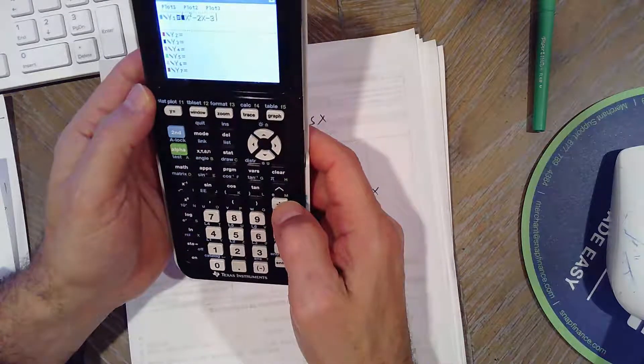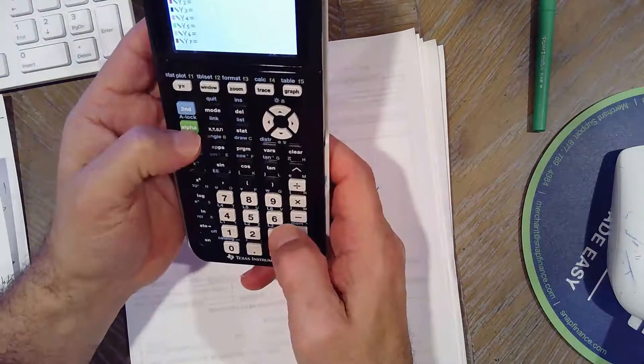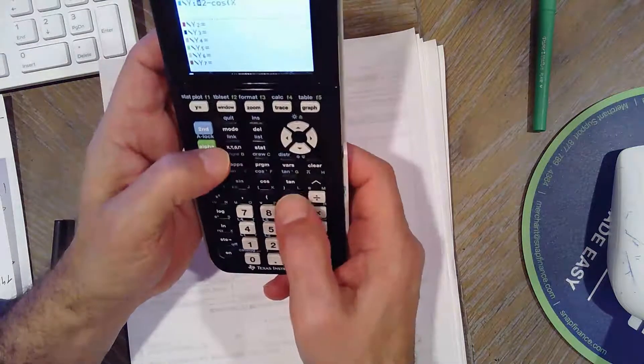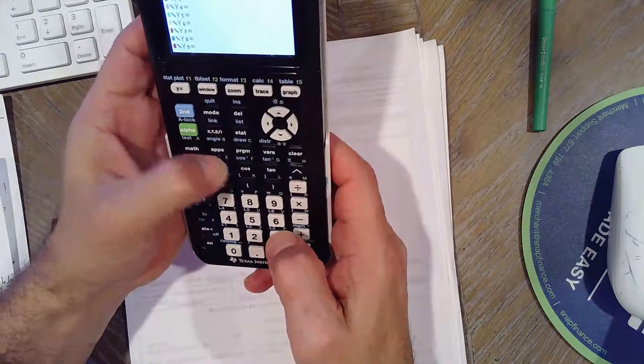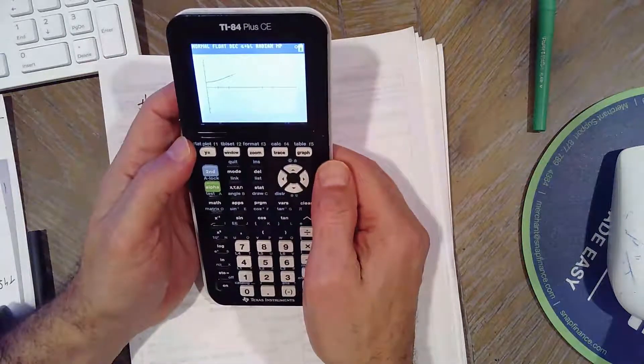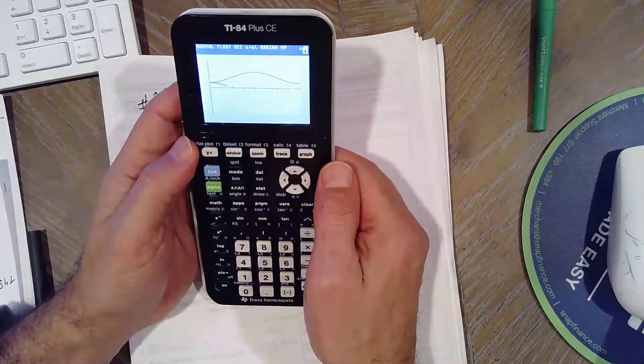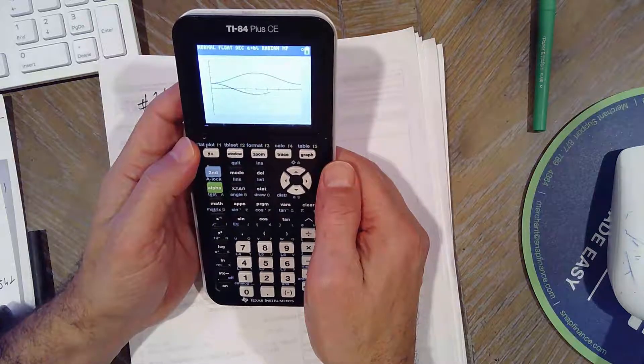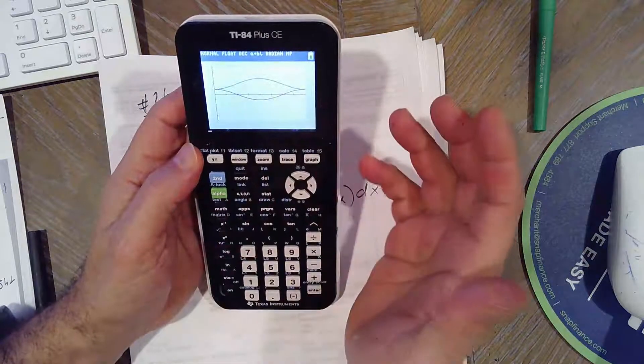Okay, I gotta graph the functions, hold on. So I gotta do Y equals 2 minus cosine X, and then Y equals cosine X. So this is 2 minus cosine X, this is the outer, or the upper, and you can see cosine X is the lower, or the inner. And 0 to 2π, that's where they intersect.